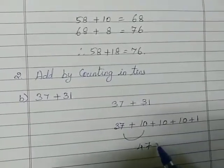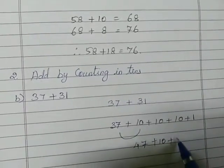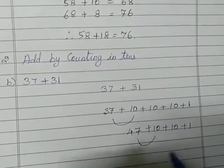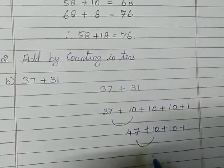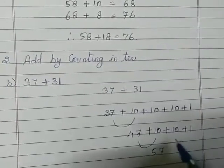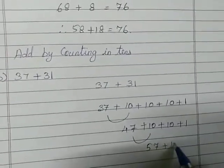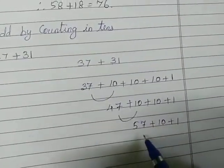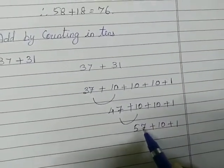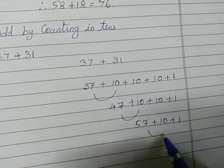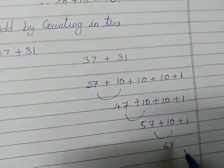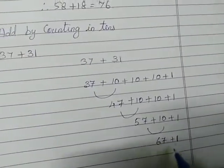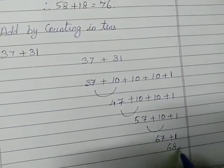The remaining number you just bring it down. Then again add the two numbers: 47 plus 10 equals 57. Bring the remaining number down. Again this process continues: 57 plus 10 equals 67. At last we add the 1s value: 67 plus 1 equals 68. That is the answer.